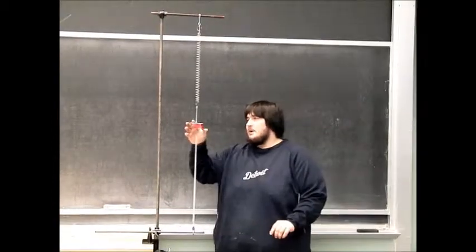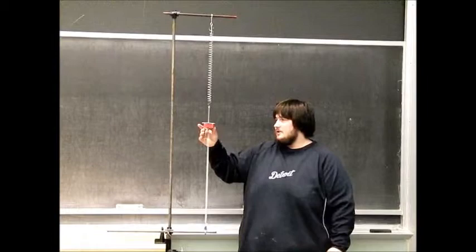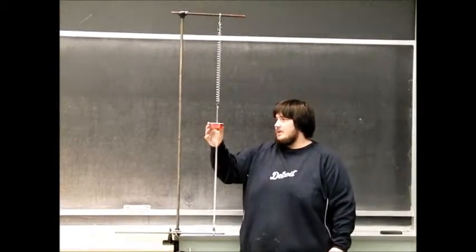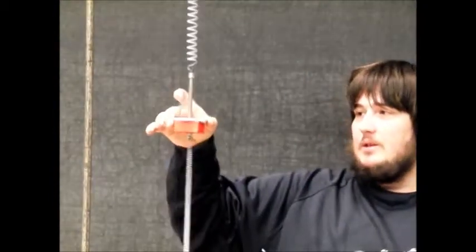This is our jumping mass on an oscillating platform, and what happens is we're showing that when the platform is dropping faster than gravity is accelerating our mass, the mass will actually freefall and lift from the platform.